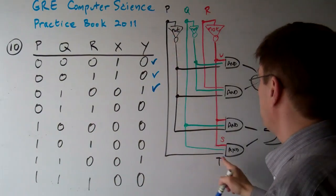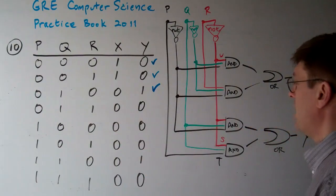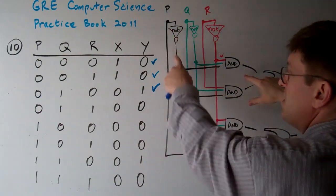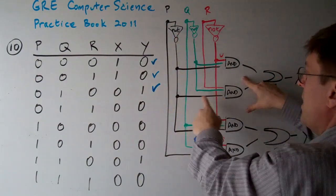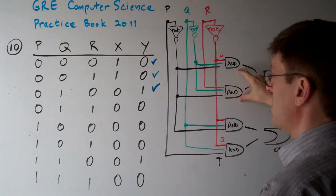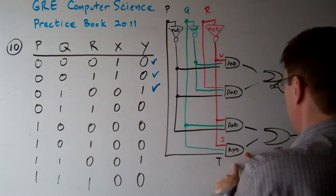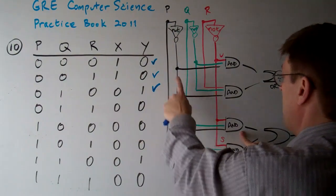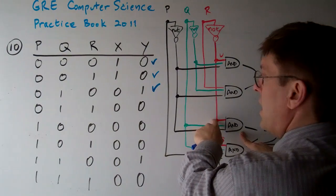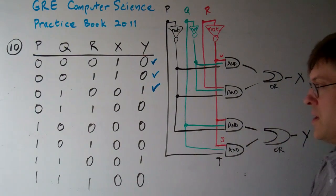If P is zero, Q is one, and R is one — for X, not P is one and one, but Q is one so not Q is zero and zero, making X zero. For Y, P is zero so one input is zero. Not P is one and Q is one, so that works. But R is one, so not R is zero, making that input zero. So we have zero and zero, meaning Y is zero. That checks out.